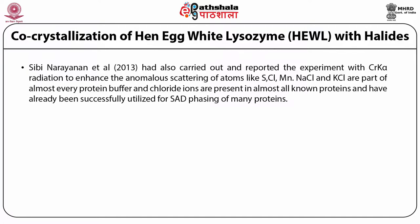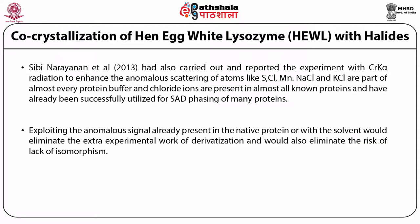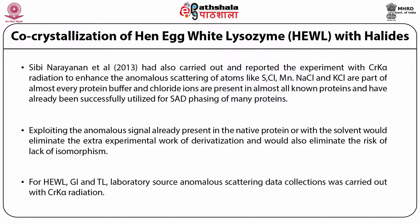Sibir Narayanan et al. also carried out and reported experiments with chromium K-alpha radiation to enhance the anomalous scattering of atoms like sulfur, chlorine, manganese, sodium chloride, and potassium chloride, which are part of almost every protein buffer. Chloride ions are present in almost all known proteins and have already been successfully utilized for SAD phasing of many proteins. Exploiting the anomalous signal already present in the native protein or with the solvent eliminates the extra experimental work of derivatization and the risk of lack of isomorphism. For hen egg white lysozyme, glucose isomerase, and thermolysin, lab source anomalous scattering data collection was carried out with chromium K-alpha to enhance the anomalous signal.